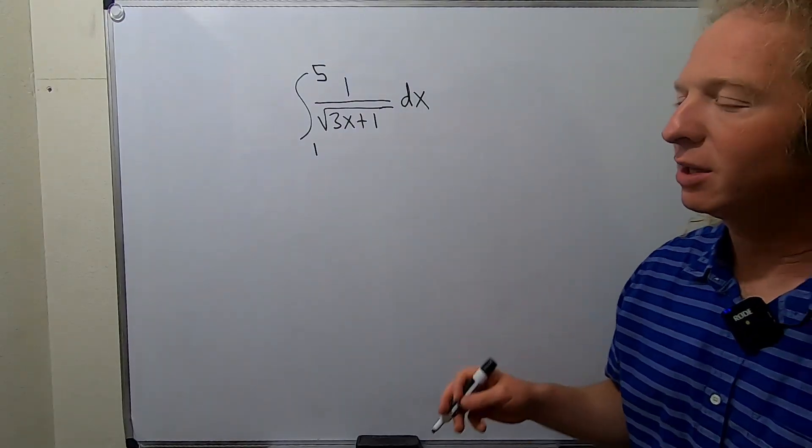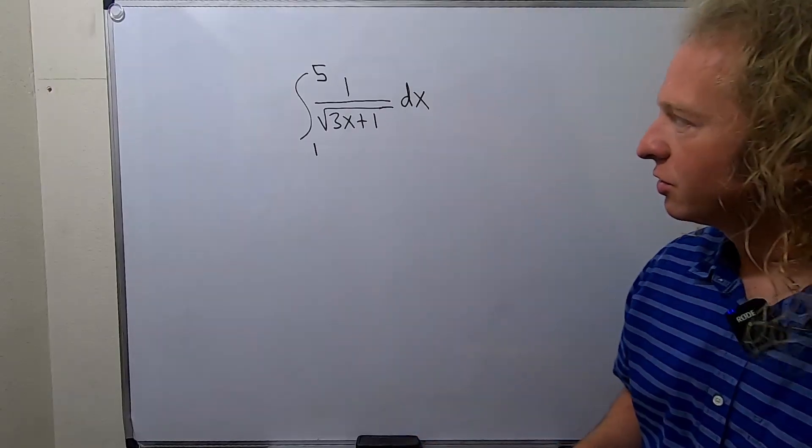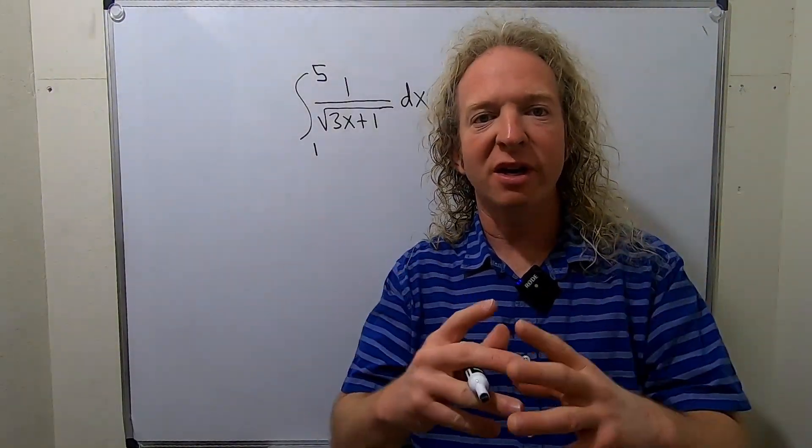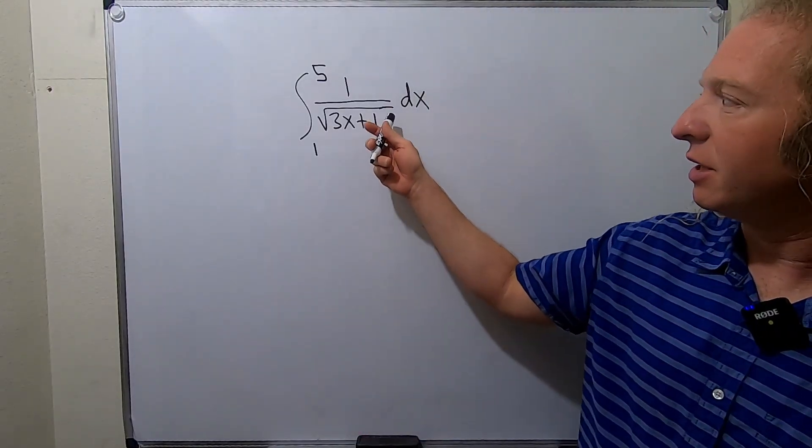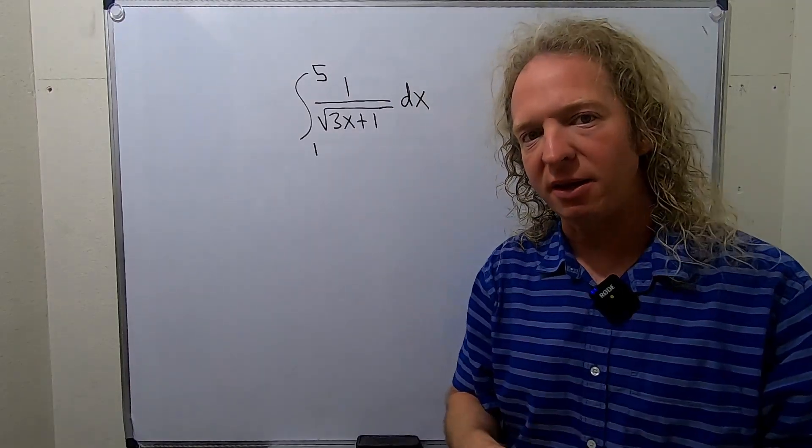In this video we're going to evaluate this definite integral using u-substitution. Whenever you're using u-substitution, usually u is your inside function, so in this case a good first attempt for our u is the piece inside the square root.